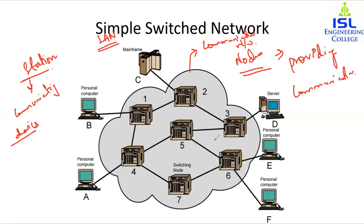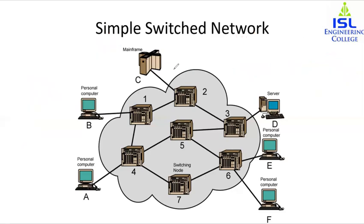This collection of nodes is referred to as a communication network. In a switched communication network, data entering from a station is routed through nodes to the destination by switching from node to node. For example, if sending data from station B to station E, B gives it to node 1, then node 1 decides whether to give it to node 2 or node 4, and so the data reaches station E.